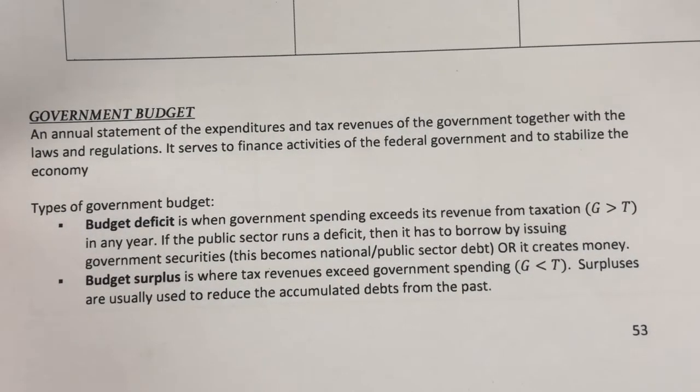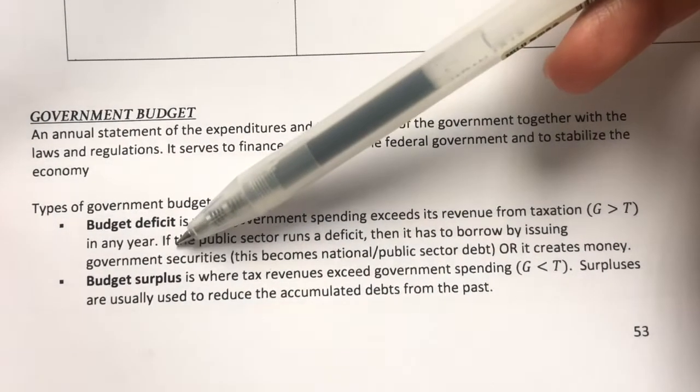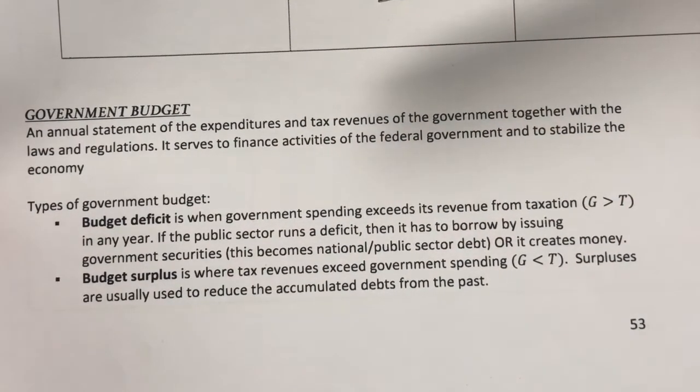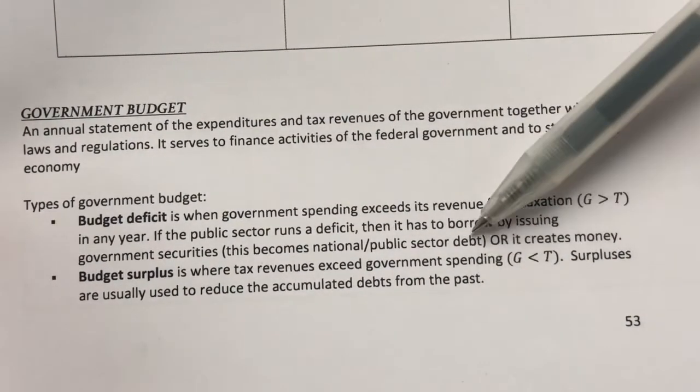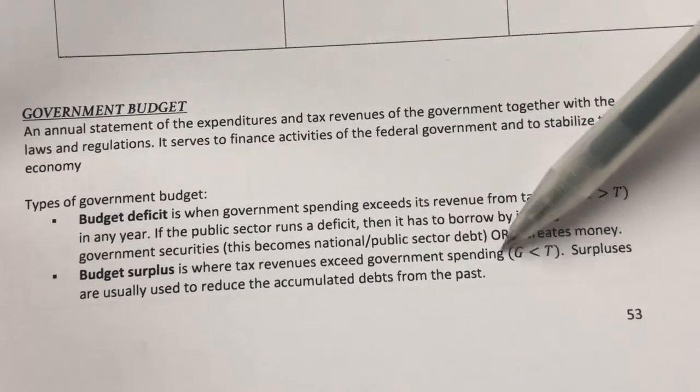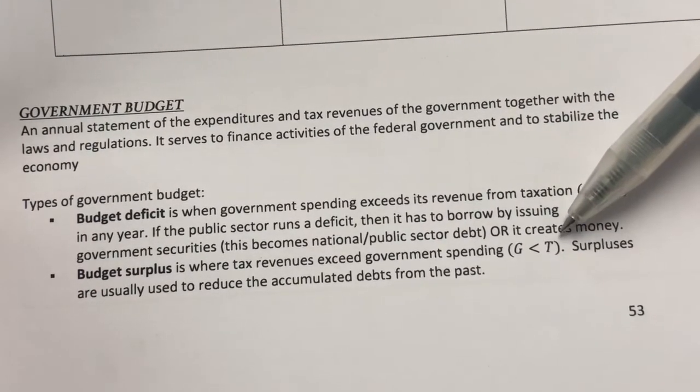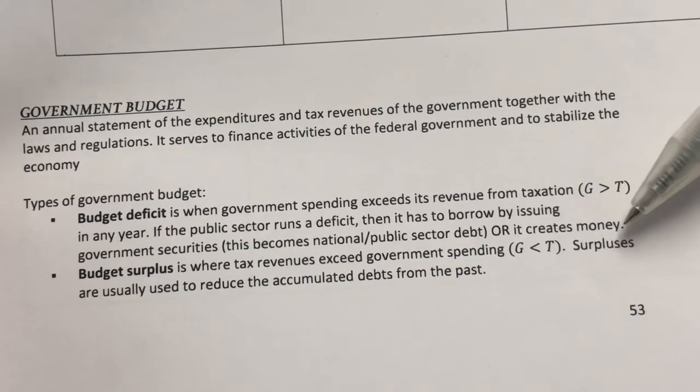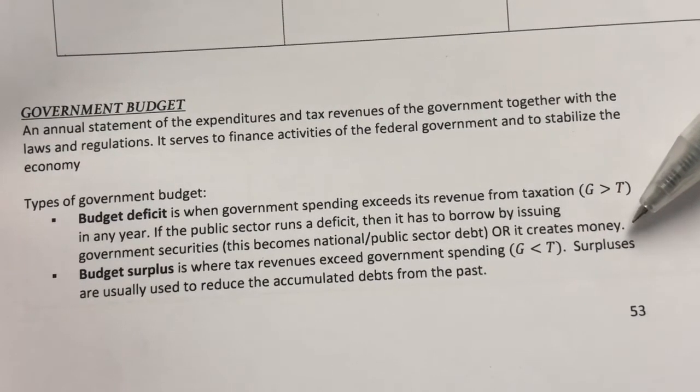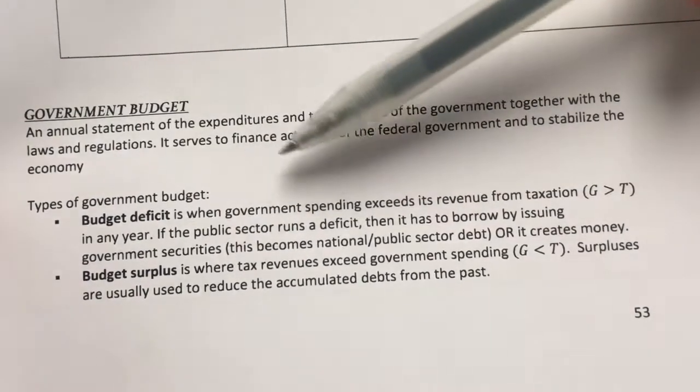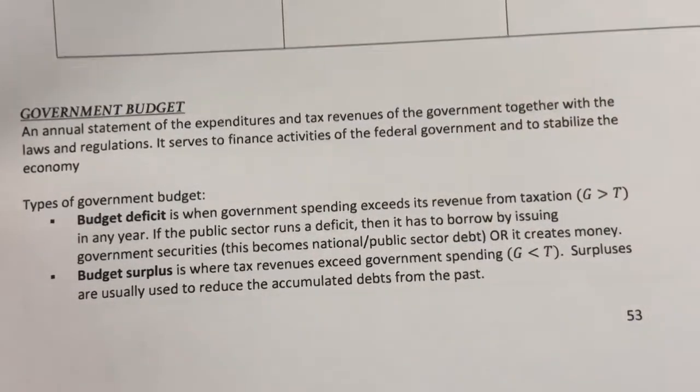The second type of government budget is a budget surplus. Now, the budget surplus is when the government's revenues is more than the government spending. Government spending is less than taxation revenues. Normally when we have these surpluses, they are usually used to pay back or to reduce the amount of accumulated debts from the past.